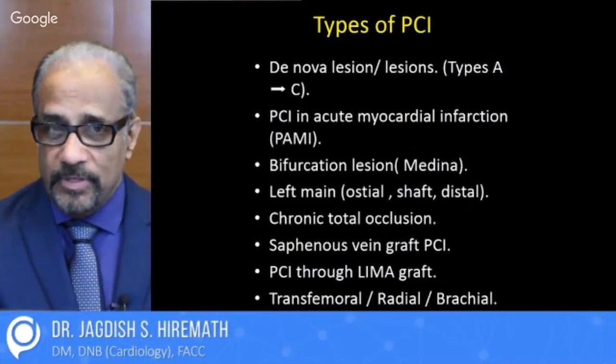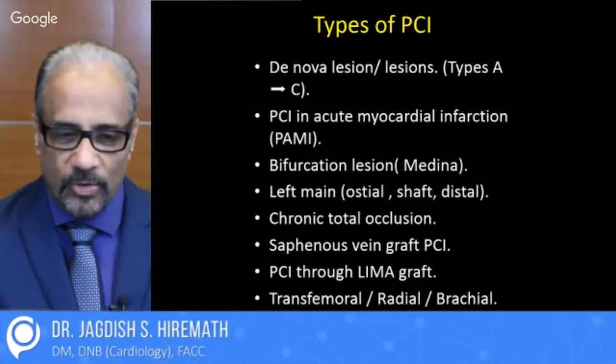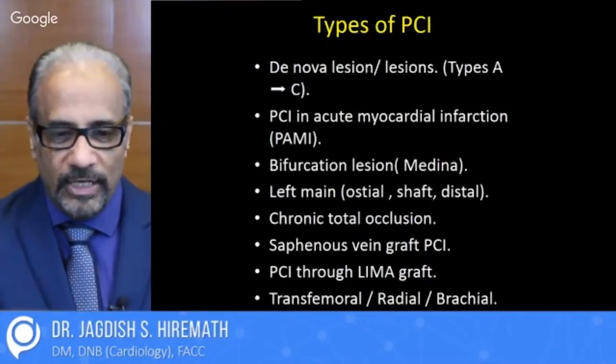The types of angioplasty are: de novo lesions which could be type A to C, PCI in acute MI which is called PAMI, bifurcation lesions, left main chronic total occlusion, and saphenous vein grafts. Angioplasty can be done through the LIMA graft or the approach could be transfemoral.